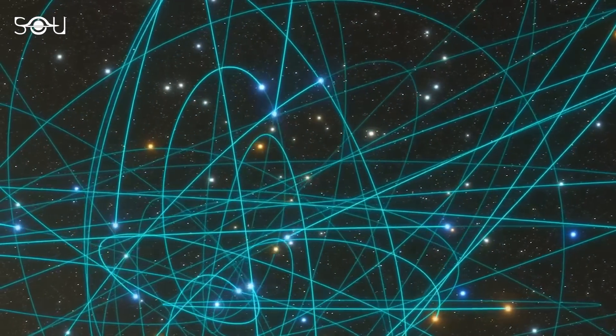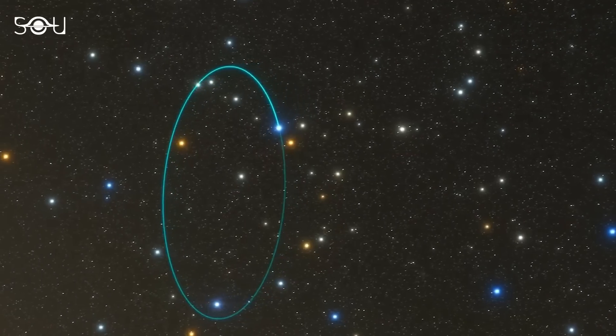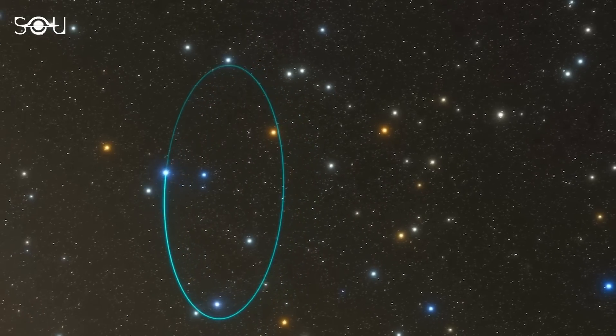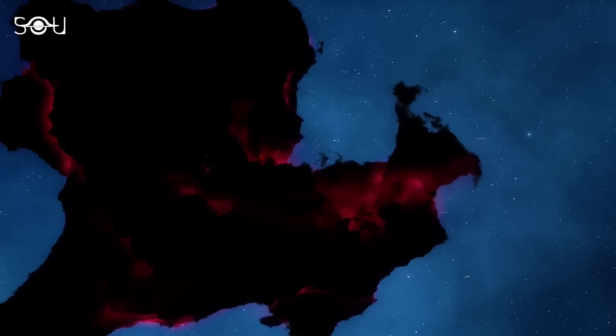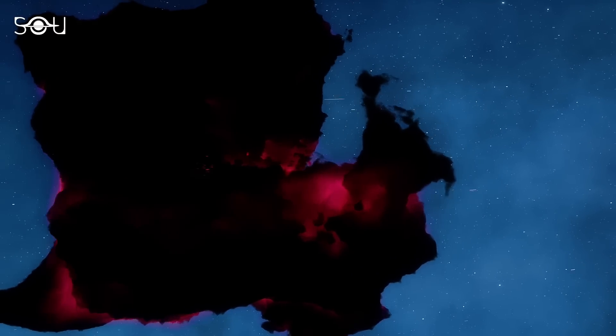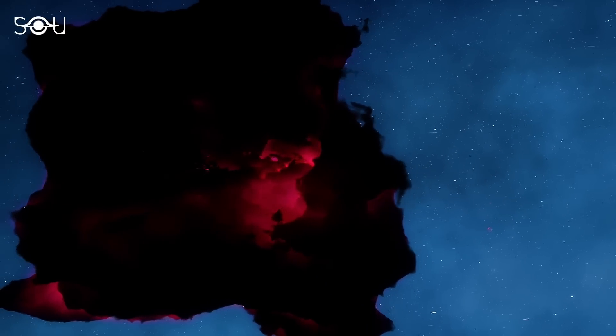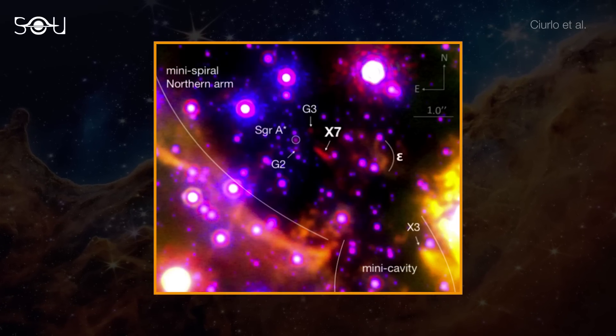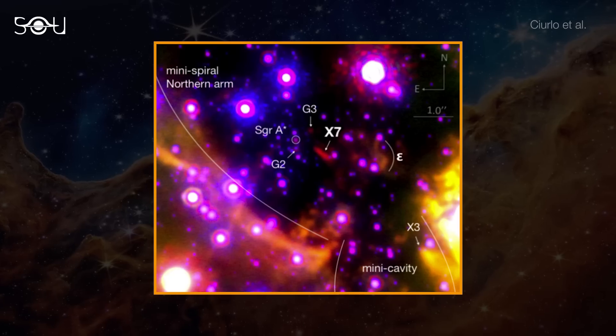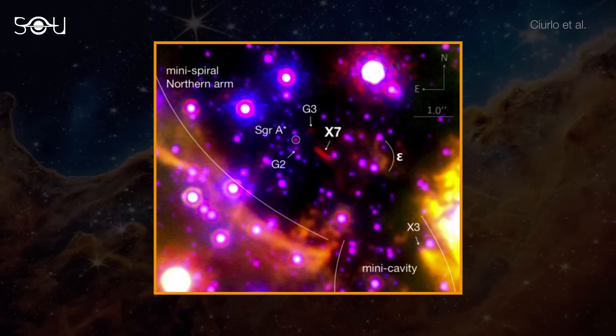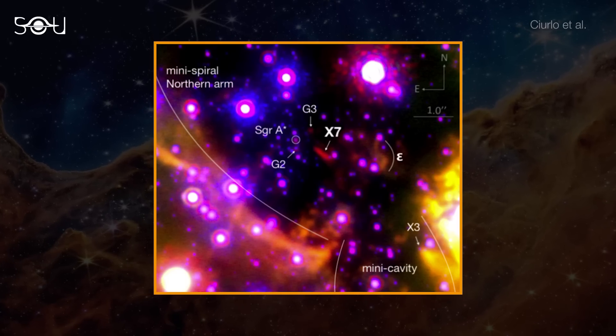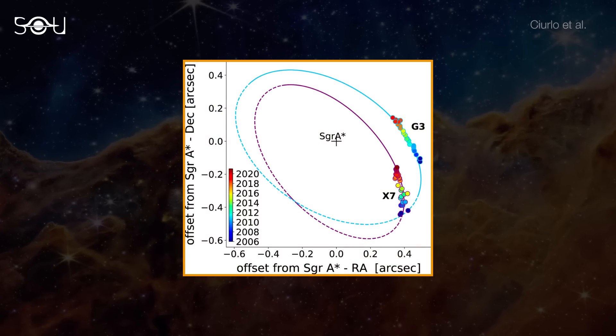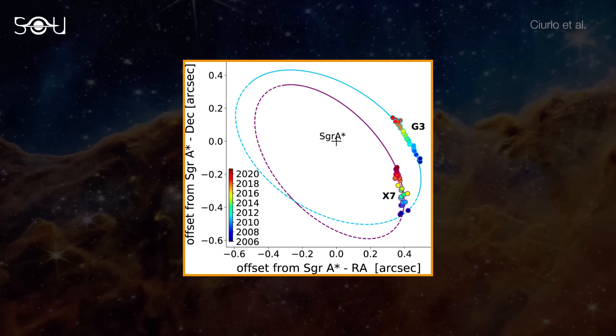These mysterious blobs, discovered about a couple of decades ago, orbit the galactic center and resembled clouds of gas and dust but possessed properties of star-mass objects. In other words, G-objects appear like gas clouds but behave like stars. A near-infrared image captured with the NIRC2 imager at the Keck Observatory displays the relative positions of the two G-objects, G2 and G3, along with X7 and Sagittarius A star.